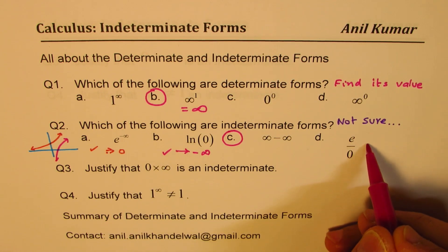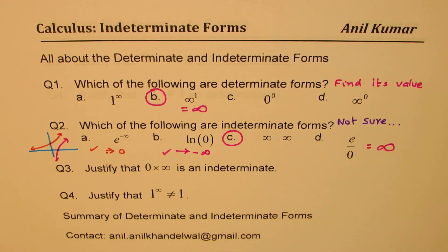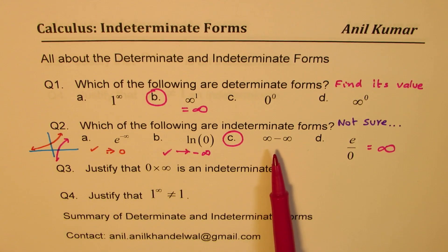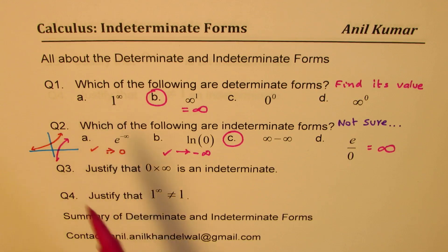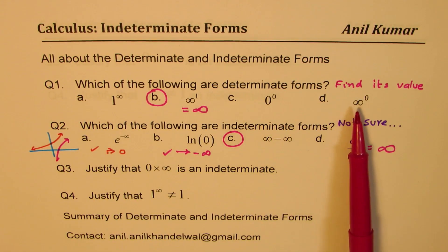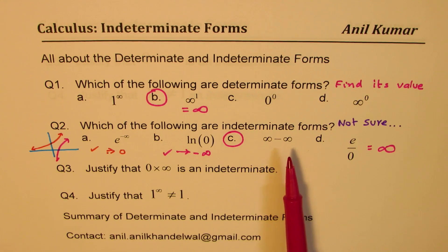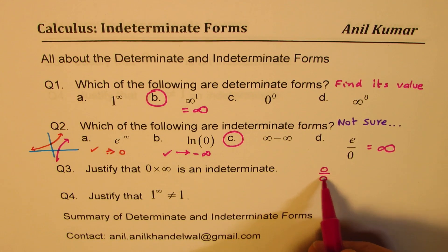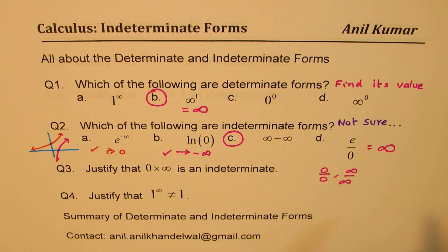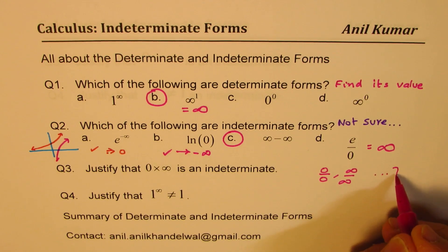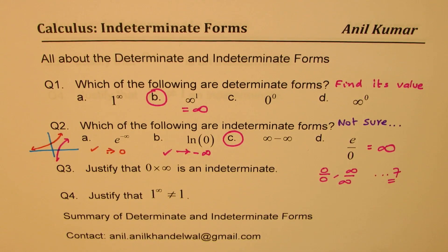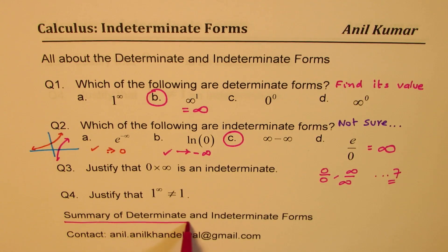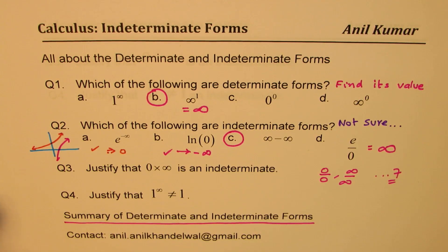And e to the power of infinity is infinitely large, so we are sure about that also. From these examples, you understand that there are quantities we are not sure of — such as 1 to the power of infinity, 0 to the power of 0, infinity to the power of 0, and infinity minus infinity. There are many more: for example, 0 over 0, and infinity over infinity. Specifically, we have seven of these, which we will look into at the end when we discuss the summary of determinate and indeterminate forms.